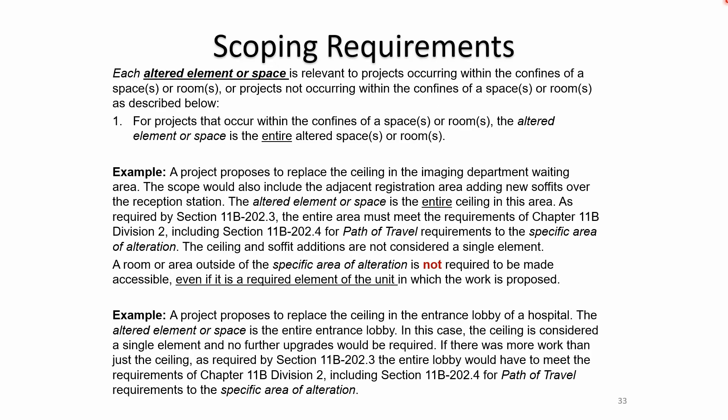Going back to scoping requirements for an altered element or space in a relevant project: for projects that occur within the confines of a space or room, the altered element or space is the entire altered space or room. For example, a project proposes to replace the ceiling in an imaging department waiting area, with the scope also including the adjacent registration area adding new soffits over the reception station. The altered element or space is the entire ceiling in this area, and the entire area must meet requirements of 11B Division II including path of travel.